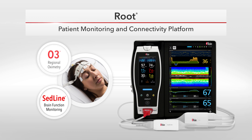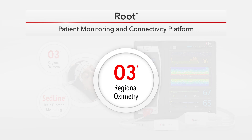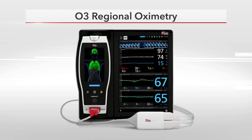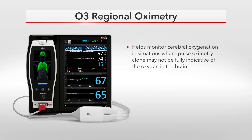The O3 system is comprised of three components: Root, the O3 Masimo Open Connect Mach 9 Module, and O3 Sensors. O3 Regional Oximetry helps monitor cerebral oxygenation in situations where pulse oximetry alone may not be fully indicative of the oxygen in the brain.